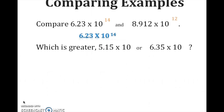Which is greater: 5.15 times 10 to the negative 4th power, or 6.35 times 10 to the negative 5th power? We're going to look at the exponents — they are not the same. Remember, when looking at negative numbers, the one closest to zero will be the larger number. We have negative 4 and negative 5. Negative 4 is closer to zero, so the answer is 5.15 times 10 to the negative 4th power.